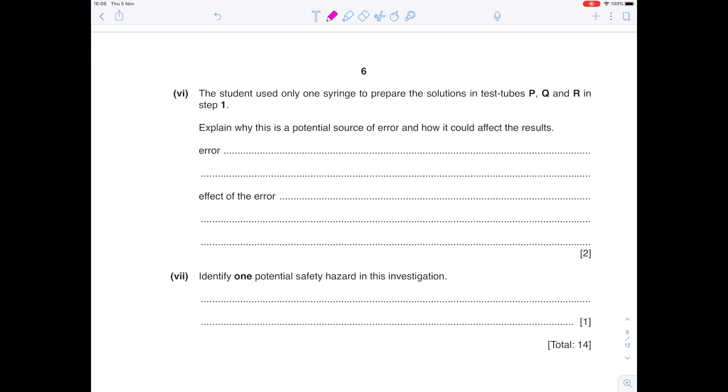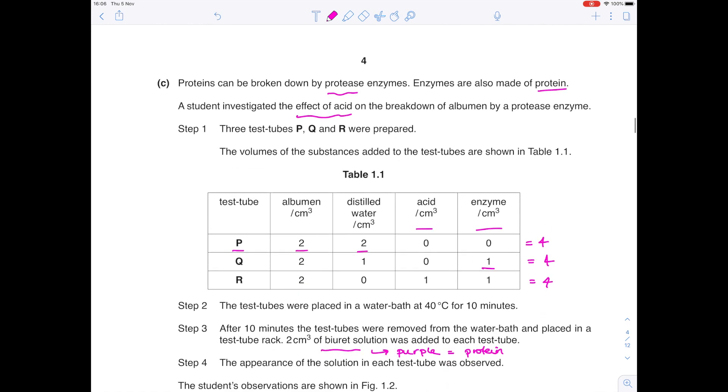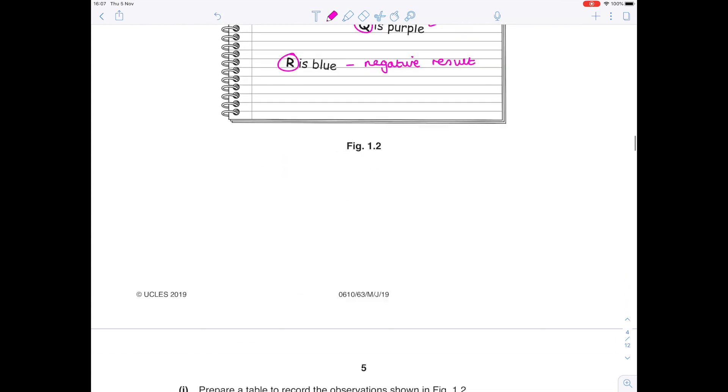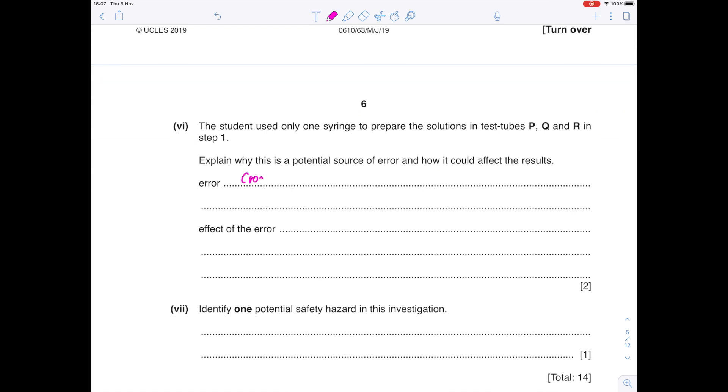A student used only one syringe to prepare the solutions in test tubes P, Q and R in step one. Explain why this is a potential source of error and how it could affect the results. So in order to understand this, we need to look at what that syringe is being used to measure. Well, it's being used to measure the amount of albumin, the distilled water, the acid and the enzyme. So hopefully you can see that in P, if that syringe had originally been used in R to measure out both the acid and the enzyme, then by the time it's measuring out the volumes for P, there could be cross-contamination. So despite the fact that there's not supposed to be any acid or enzyme in P, certainly there could be some due to residual acid and enzyme left from Q. So we're going to point out that there could have been cross-contamination. P could potentially contain acid and enzyme when it's not supposed to. Identify one potential safety hazard in this investigation. Well, remember there's acid, which is corrosive and could damage eyes.